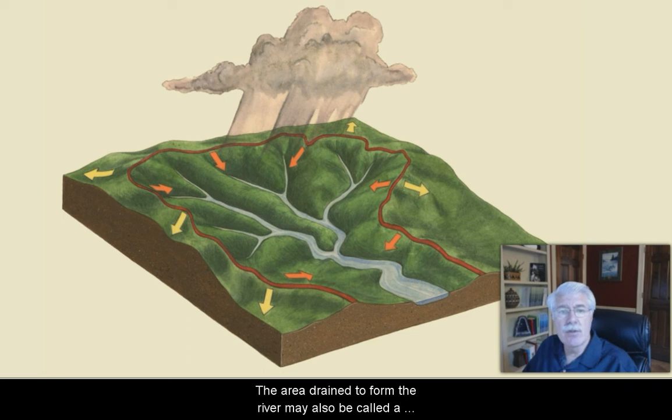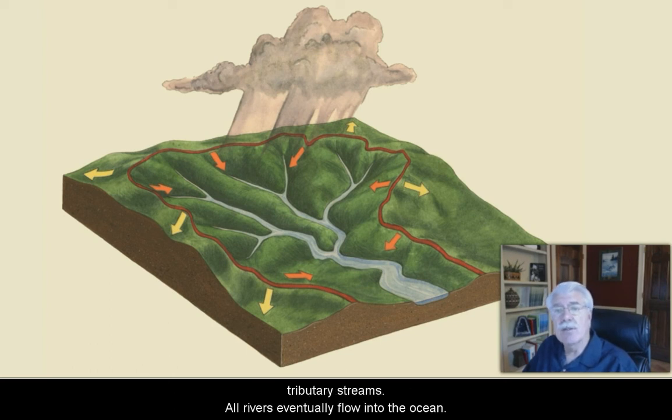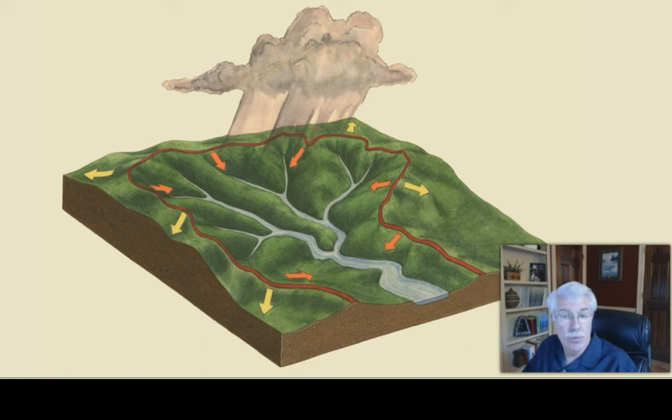The streams combine with other streams to form rivers. The area drained to form the river may also be called a river basin in addition to being called a watershed. The river basin is land drained by a river and all of its tributary streams.